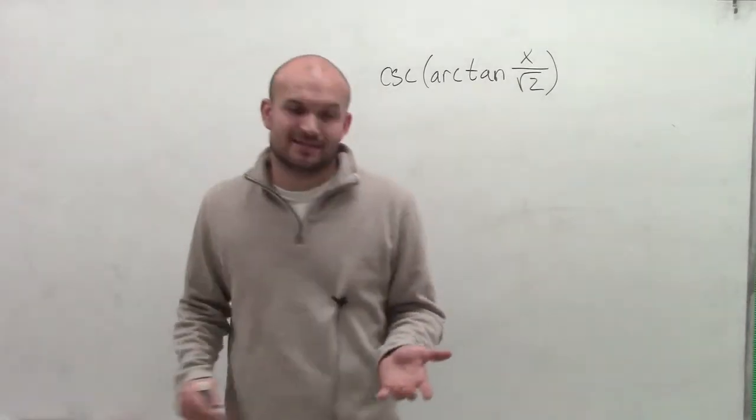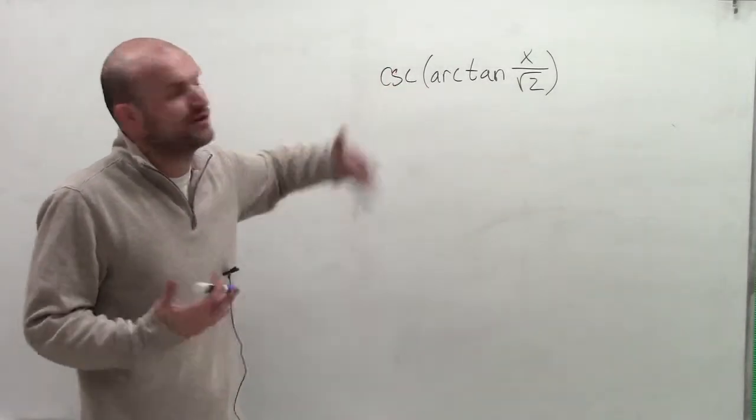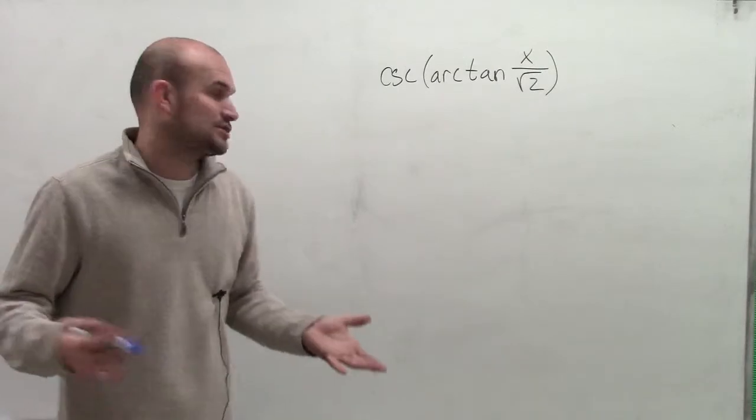So to do a problem like this, what we're going to do is, we notice obviously we don't have a point on the unit circle. We're going to have to create a triangle.